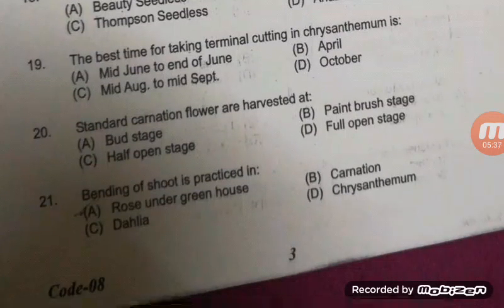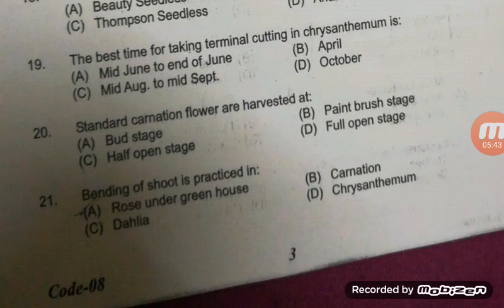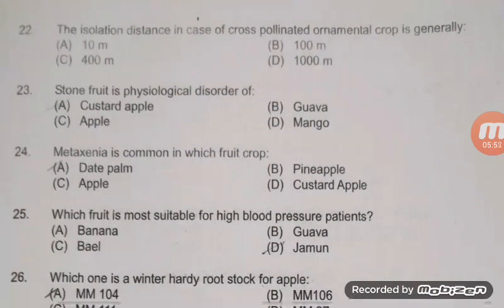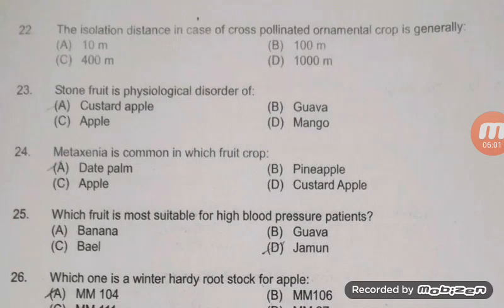Standard carnation flowers are harvested at — the right answer is B — paintbrush stage. Bending of shoot is practiced in — option A is right — rose under greenhouse. This is a very basic question. The isolation distance for cross-pollinated ornamental crop species — option C is right — 400 meters for cross-pollinated and 100 meters for often cross-pollinated.